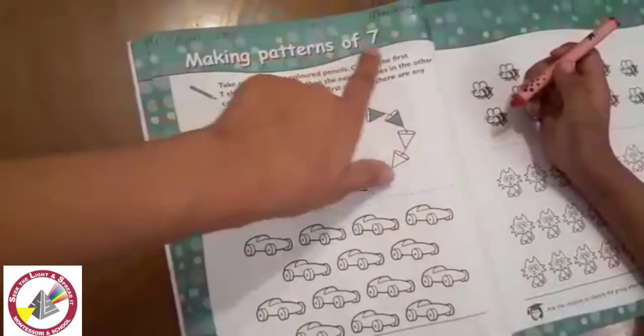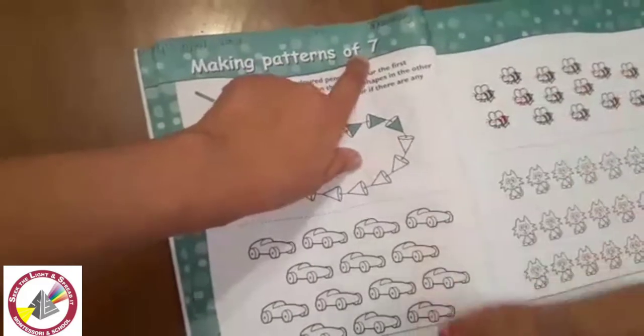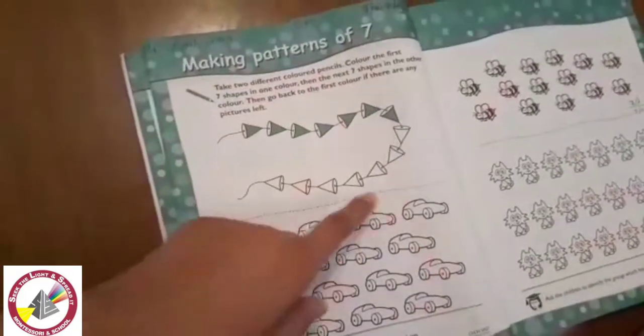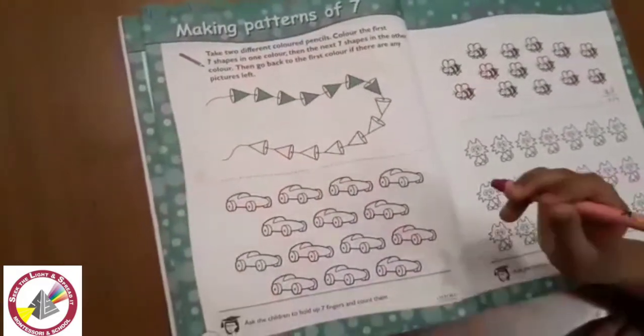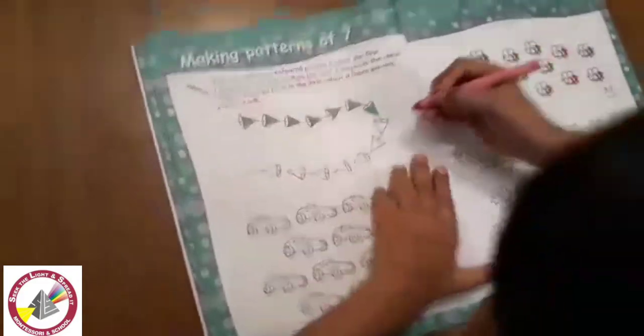So how many are you supposed to color? Seven. Seven. And it's going to all be in which color? Red. Yes. Go ahead. Go ahead and color your seven. I'll wait.